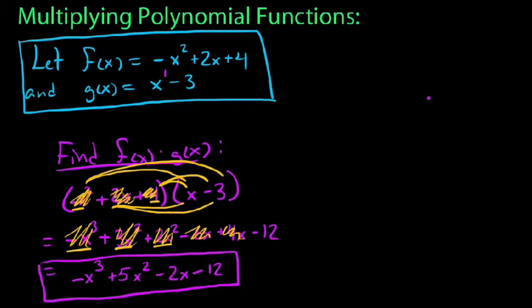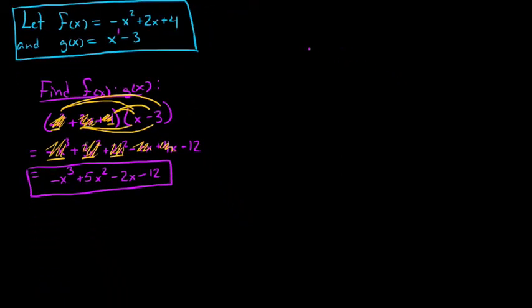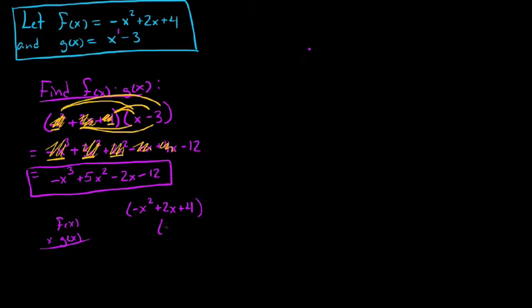Now let's do this again, except this time we're going to stack these — find f of x times g of x vertically. One thing to point out: multiplication is commutative, so we could have done g of x times f of x and gotten the same thing. When we do this vertically, it's convenient to put the shorter function on the bottom. So we write negative x squared plus 2x plus 4 on top, and x minus 3 on the bottom.